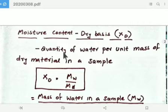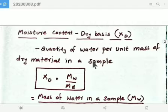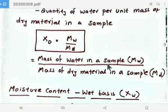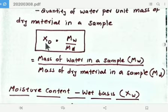Moisture content on a dry basis is the quantity of water per unit mass of dry material in a sample — only the dry material is taken as the denominator. So the equation is: XD equals Mw divided by Md, where Mw is the mass of water and Md is the mass of dry material.